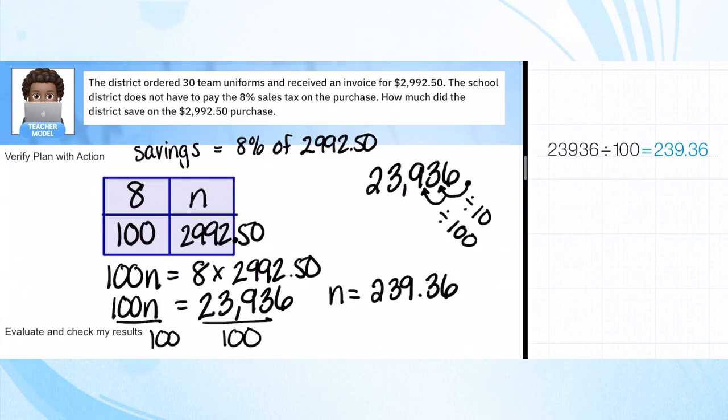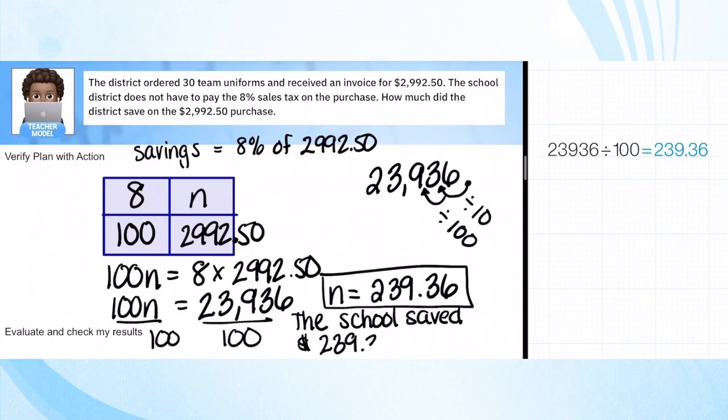That's the same amount I had by just moving the decimal over, so I'm going to have that in my final answer. The school saved $239.36 on the purchase. There you go. Math marbles, hit pause so you can jot this down into your notes.